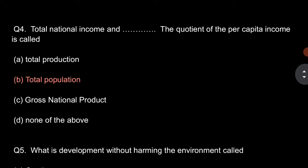Question number 4: Total national income divided by the total population gives us the per capita income. When we divide the total national income with the total population, we get the per capita income.